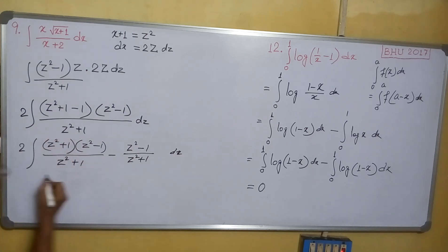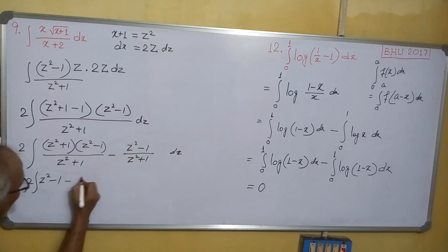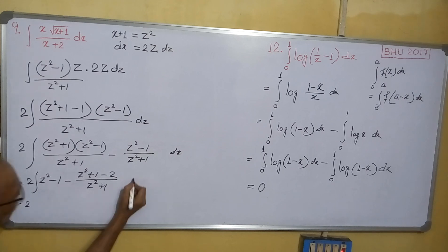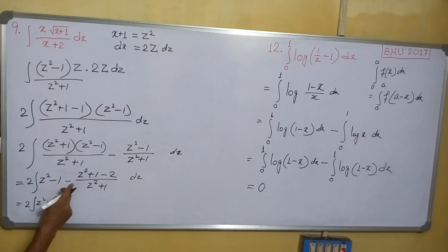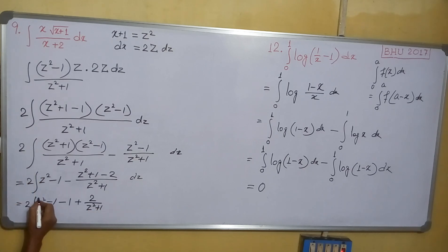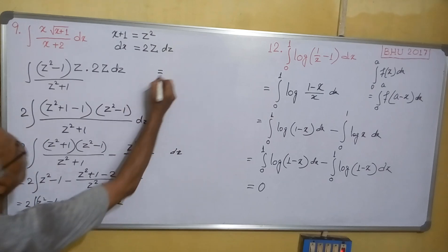This equals, see, we can cancel so it will be 2(z²-1). Now this part I can write as (z²+1-2)/(z²+1). This equals 2 times, we can separate: z²-1 minus, then (z²+1)/(z²+1) will be 1, then minus times minus will be plus 2/(z²+1), the whole thing dz.